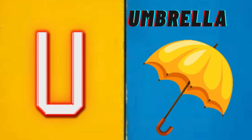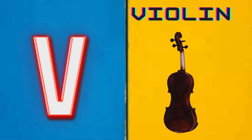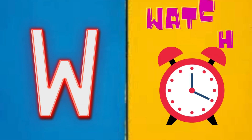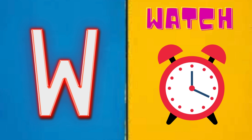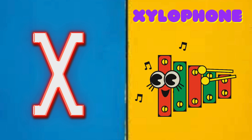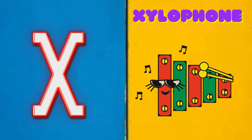U is for Umbrella, U-U-Umbrella. V is for Violin, V-V-Violin. W is for Watch, W-W-Watch. X is for Xylophone, X-X-Xylophone.